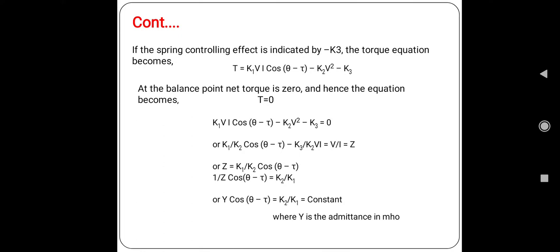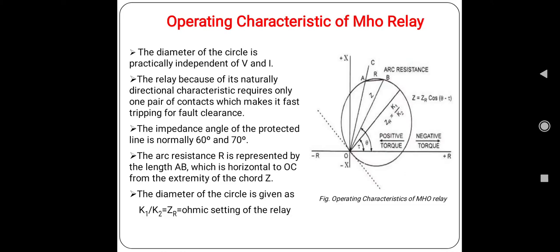Hence the relay has one circular characteristic, and we will see the characteristics here. The diameter of this circle is practically independent of voltage and current except at very low values of current or voltage when the control spring effect is considered. But due to consideration of control spring effect, the diameter will decrease.